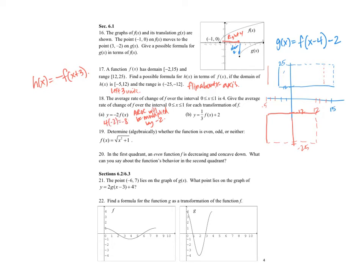And here, this plus 2 doesn't change the average rate of change, but the 1/3 will. So it's going to be 1/3 times the original average rate of change, which is 4, so you get 4/3. That's the new average rate of change. So this is the answer for A and this is the answer for B.